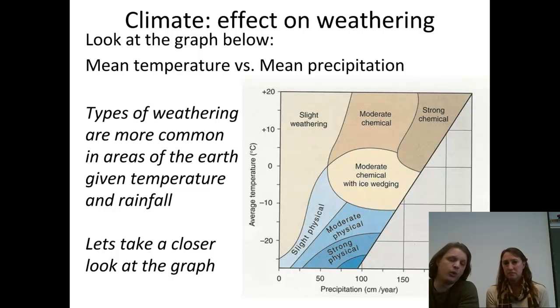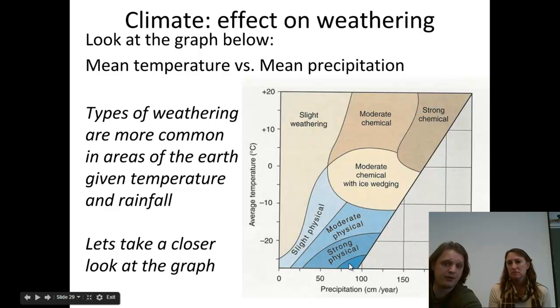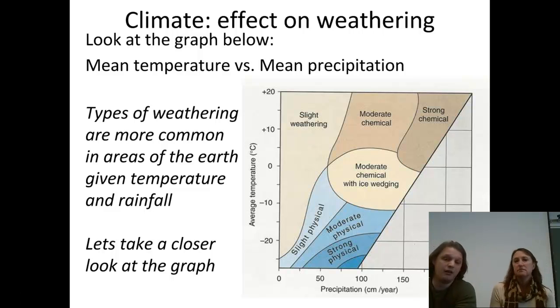And if we go lower, we see where the strong physical weathering is. But then notice, if I decrease the amount of rainfall, then I decrease the amount of physical weathering taking place. Because if there is no water source, then we can't really have physical weathering.